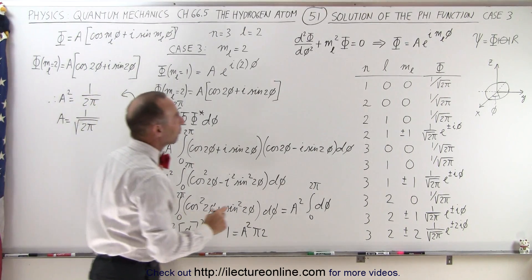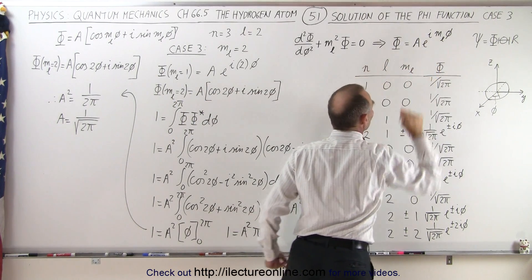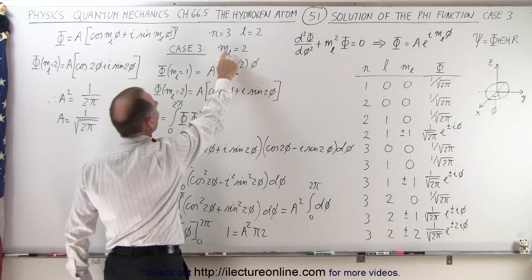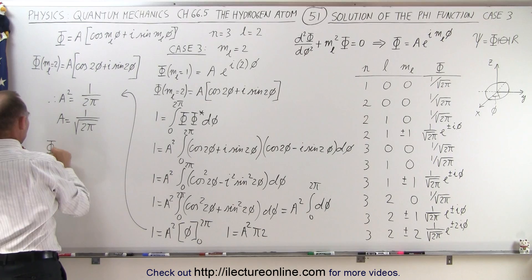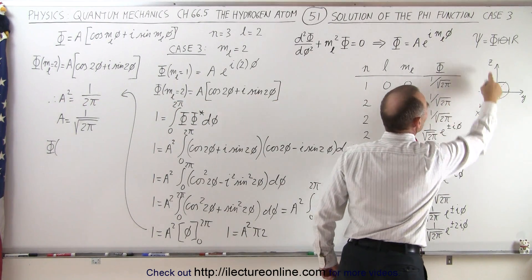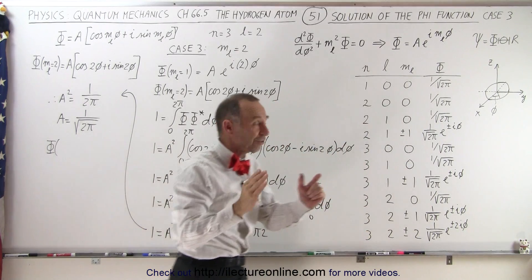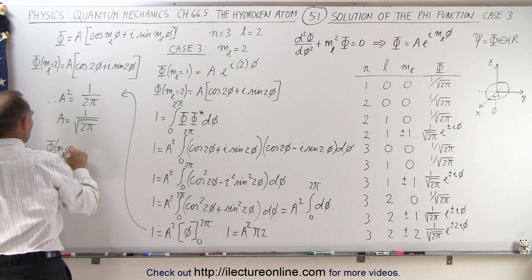So this now goes in front of our function here instead of a, because we've normalized it. And instead of m sub l, we're going to get the number 2, because that was the case that we're solving. So now we can say that the function, which represents the azimuthal portion of the solution of the Schrödinger equation, it's always nice to know exactly what we're doing here.